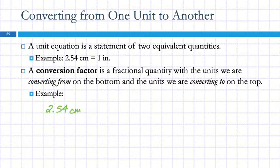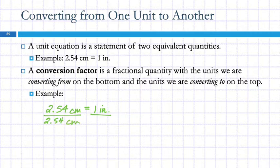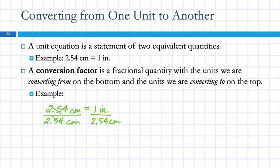We take our unit equation: 2.54 centimeters equals 1 inch. That is an equality — one side equals the other. If we divide both sides by 2.54 centimeters, 2.54 divided by 2.54 is 1, and centimeters divided by centimeters equals 1. So this fraction equals 1.